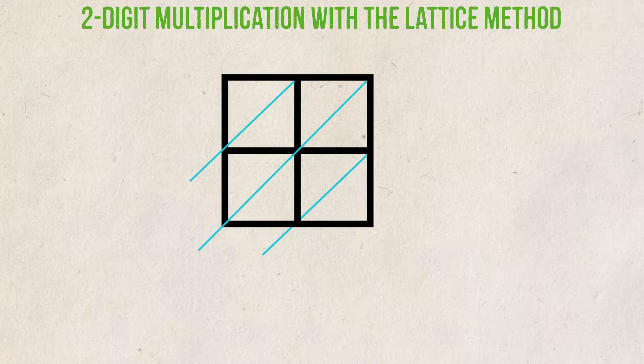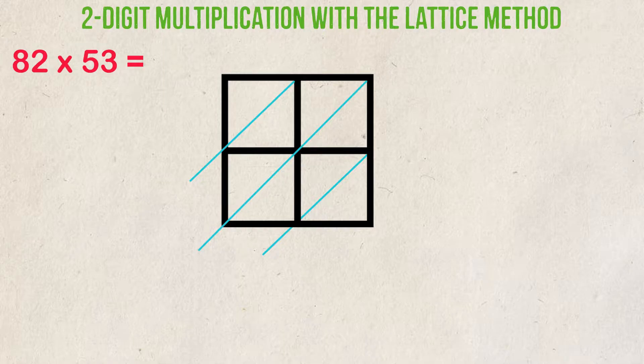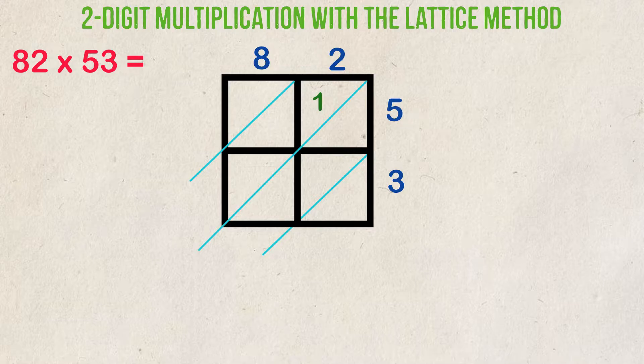Example 2. Multiply 82 times 53. Let's set up our boxes with two columns and two rows. We put 8 and 2 on the top, and 5 and 3 on the right-hand side. 2 times 5 is 10. We put the 1 here and the 0 here. 2 times 3 is 6. We put the 0 in this section, and the 6 over here.